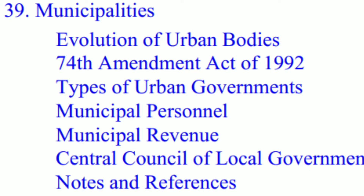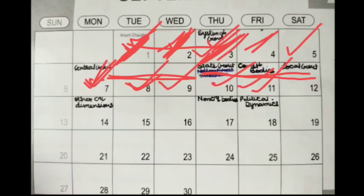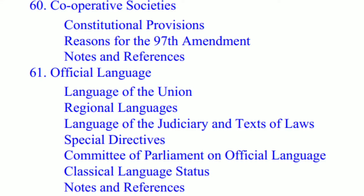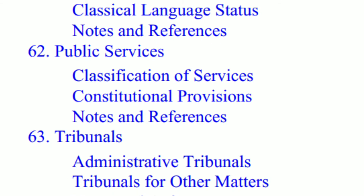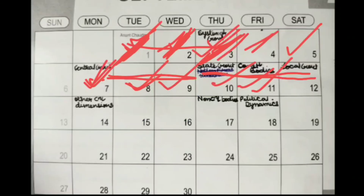On day twelve, having done Panchayati Raj on day eleven, you do Municipalities — which ends the local government section, Part 5 of Polity. Along with that, you complete chapters 60, 61, 62, and 63 all together. So that is your day twelve.